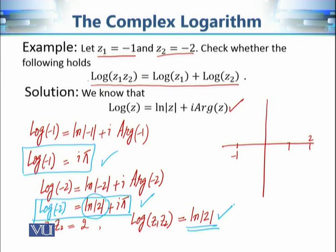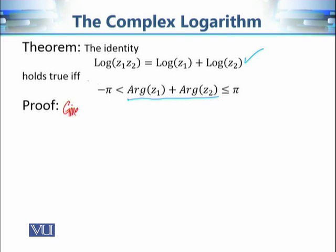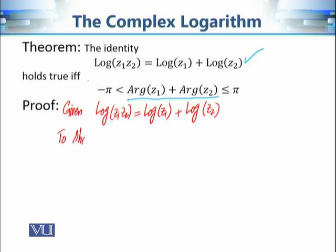What is really happening is that when we add the two principal arguments, the sum escapes the range (−π, π], and that is why the property fails. So if Arg(z1) + Arg(z2) lies within (−π, π], then the property holds. This gives us our next result. The proof is straightforward. If it is given that Log(z1·z2) = Log(z1) + Log(z2), we need to show that Arg(z1) + Arg(z2) ∈ (−π, π].